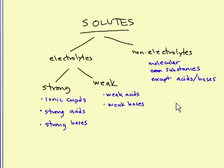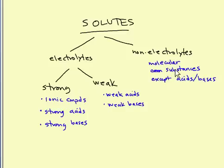We'll look at the definition of acids and bases. And let me remind you that this is an important place to know the difference between ionic and molecular substances. Ionic substances are made of metals and non-metals, formed from ions. And molecular substances are covalently bonded molecules made of non-metals only.